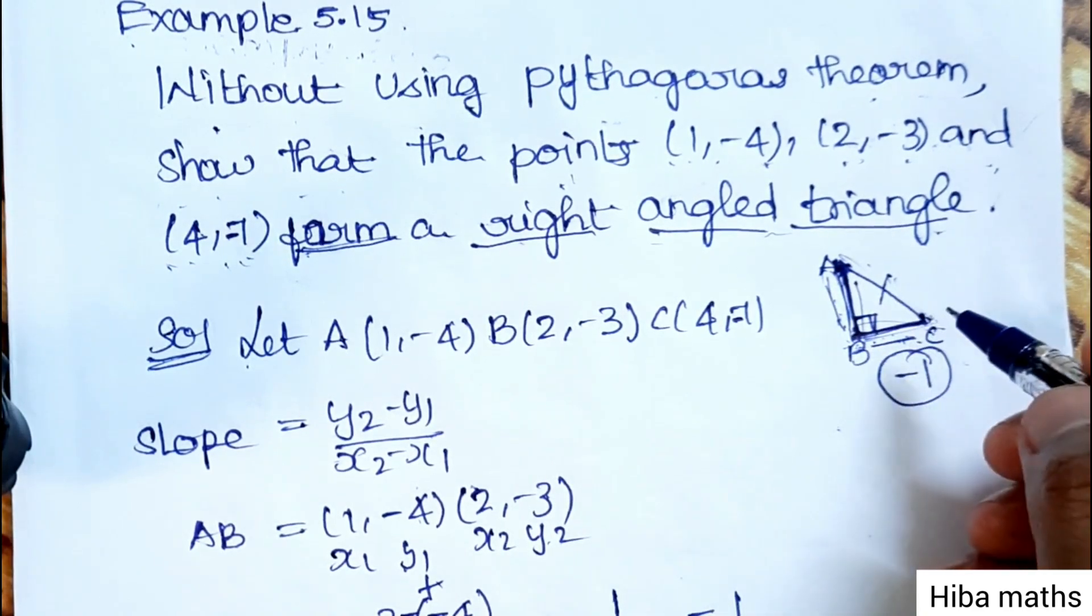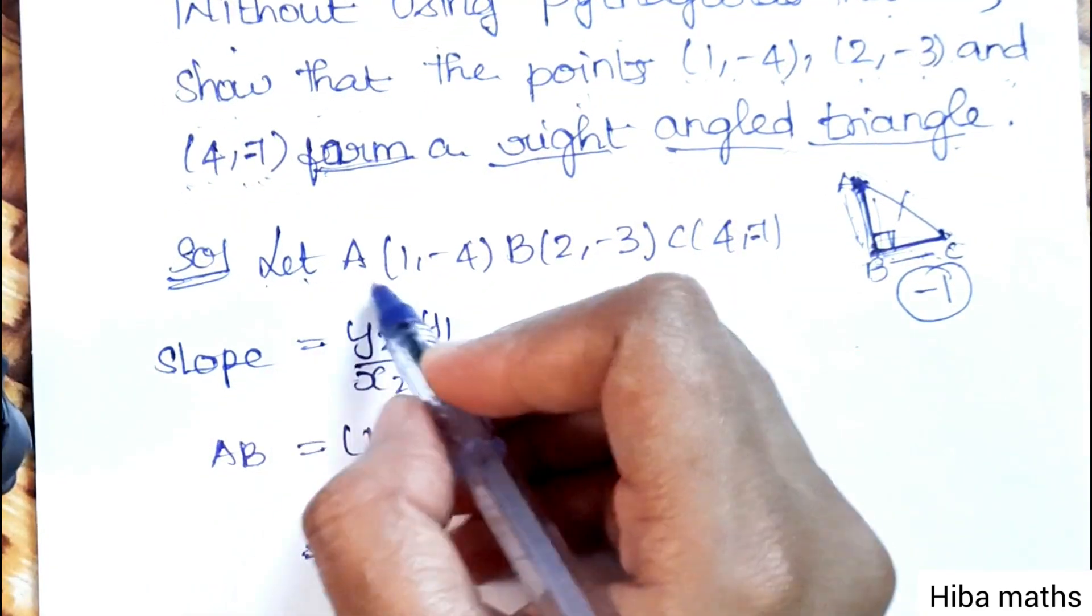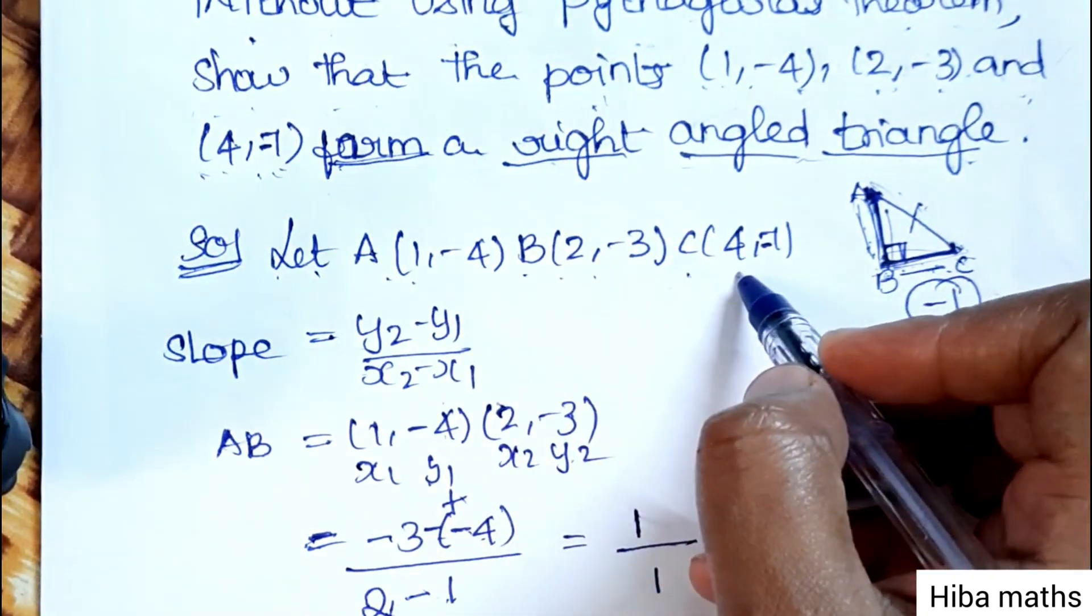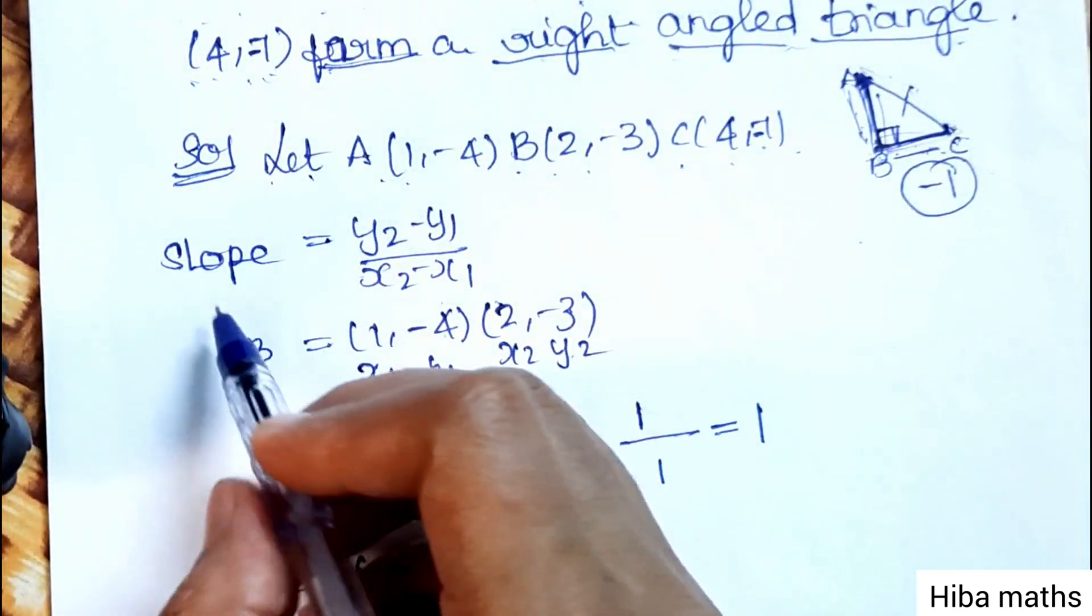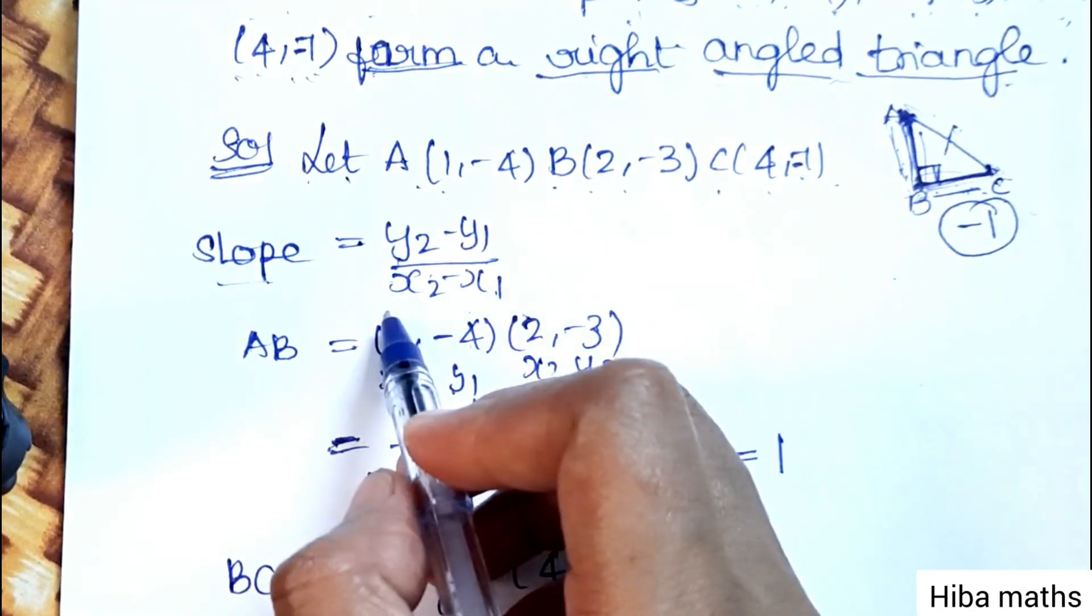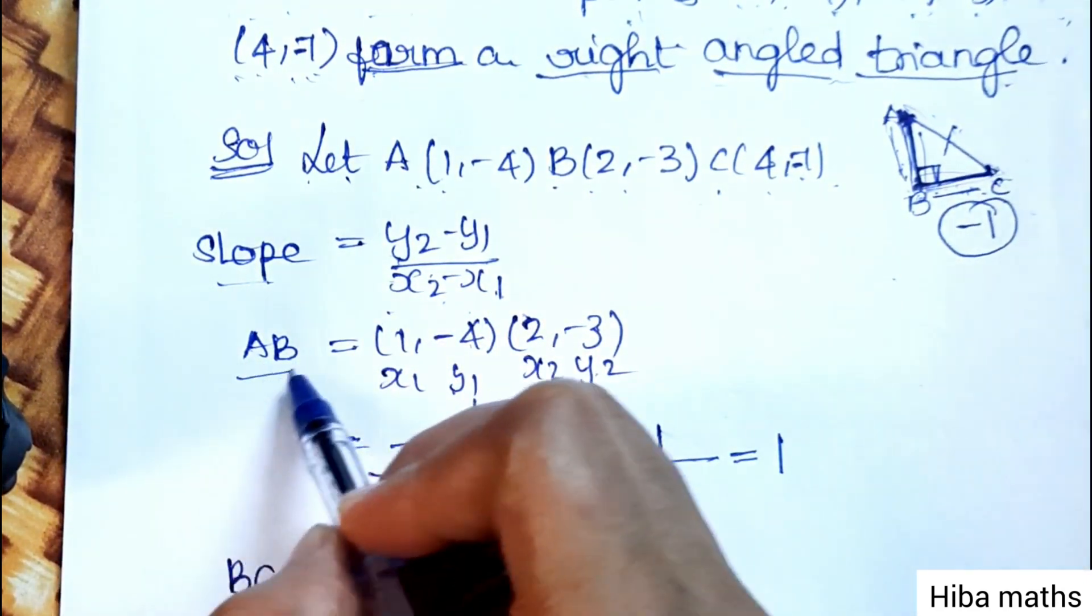Let A(1,-4), B(2,-3), and C(4,7). Now the slope formula is y2 minus y1 divided by x2 minus x1. For AB first of all.